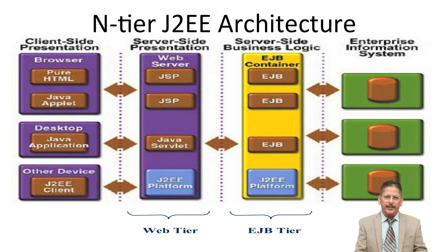In the entire J2EE architecture, the first tier is client-side presentation, the second is server-side presentation, the third is server business logic, and the fourth is the enterprise information system. In client-side presentation we can use pure HTML, Java Applet, Java Application, J2EE client applications, JavaScript, VBScript, C# script, and other scripting languages combined with HTML.